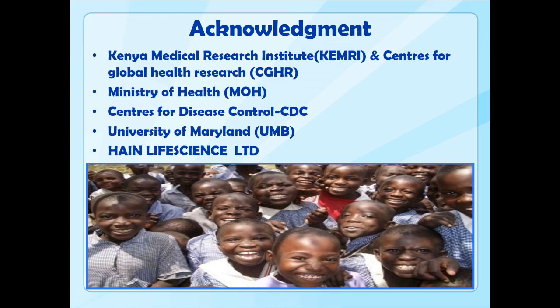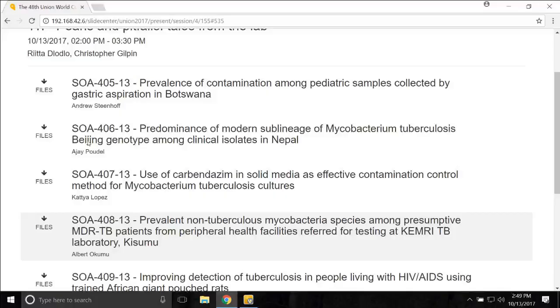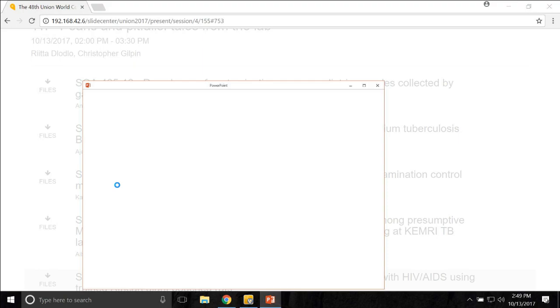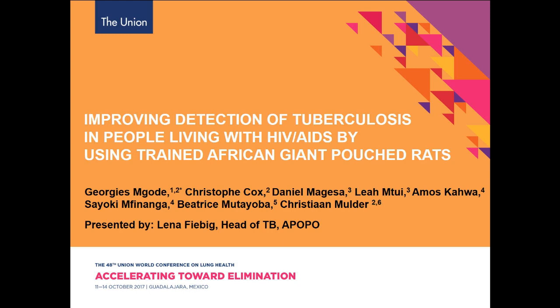Thank you very much, Albert. My name is Lena Fiebig and I joined APOPO only very recently. I'm presenting on behalf of Dr. Mgode, our program manager from Tanzania, who unfortunately did not get a visa in time. We're very happy to have a chance to present a small set of our operations data — not a formal research study — on improving the detection of TB in people living with HIV by use of our African giant pouch rats.